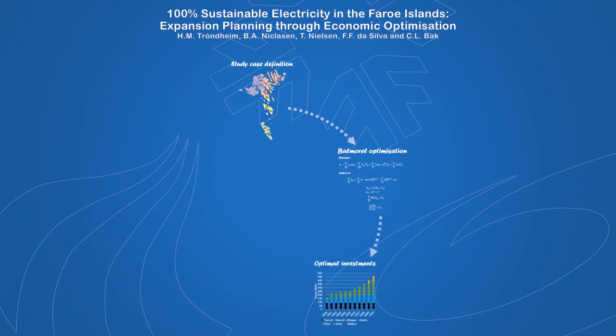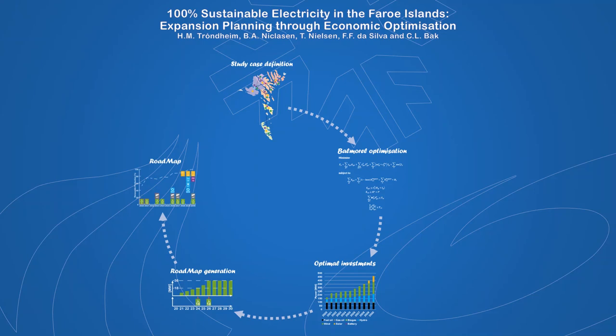From Balmorell, we obtained the annually optimal investments at each investment site. In order to obtain a realistic roadmap, we identified a need to translate the annual results into actual investment projects. The roadmap itself is therefore not optimal but based on an optimization.